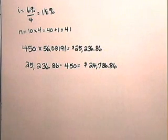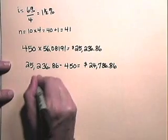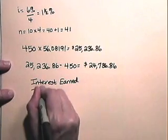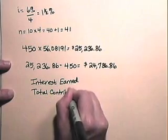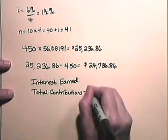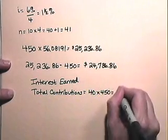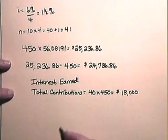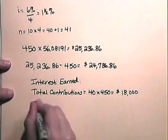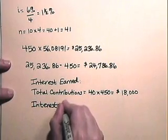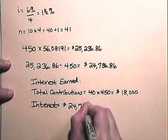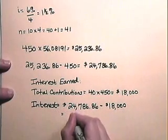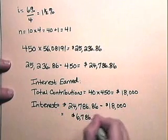And we also want to find the total interest earned. So the interest earned will be the total contributions, which is 40 times $450, which is $18,000. The total contributions are subtracted from the amount of the annuity. So that's $24,786.86 subtract the total contributions of $18,000. And so the interest is $6,786.86.